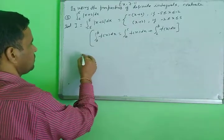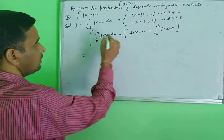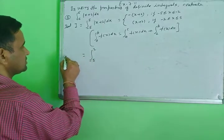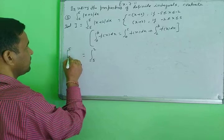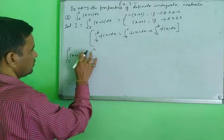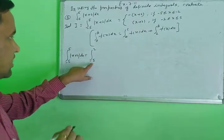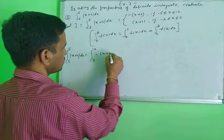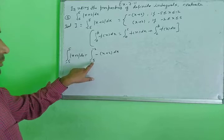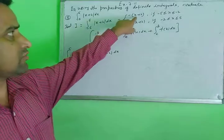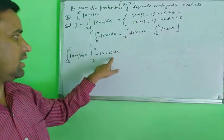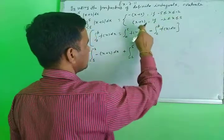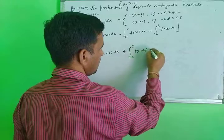Using property P2, break the integral: I equals the integral from minus 5 to minus 2 of minus(x plus 2) dx plus the integral from minus 2 to plus 5 of (x plus 2) dx. When the limit is minus 5 to minus 2, the function is negative so we use minus(x plus 2). When the limit is minus 2 to plus 5, the function is positive so we use (x plus 2).